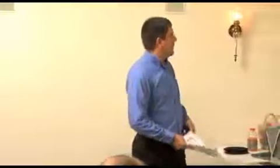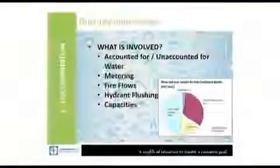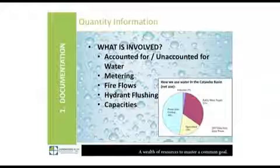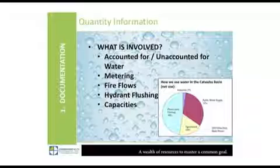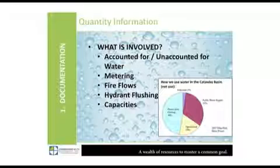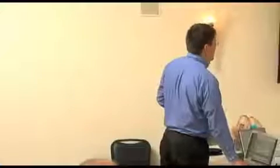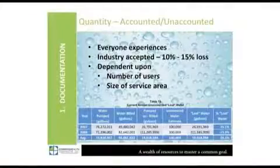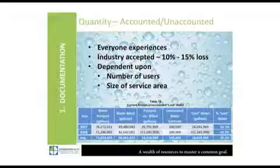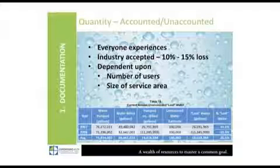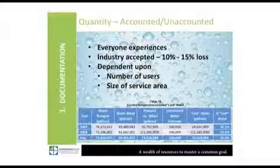The next part I'm going to talk about is quantity information — what's involved. It could be accounted and unaccounted-for water, metering, fire flows, hydrant flushing, and capacities. As for accounted and unaccounted-for water, everyone experiences it. Typically the industry standard is about 10 to 15% loss, depending on the number of users you have and how big your system is.